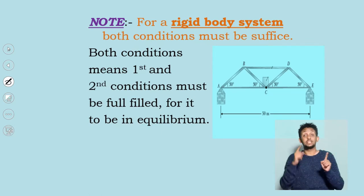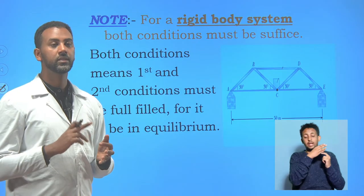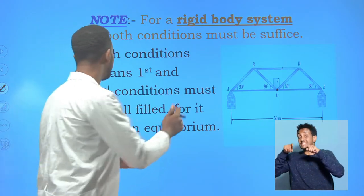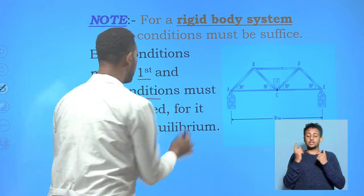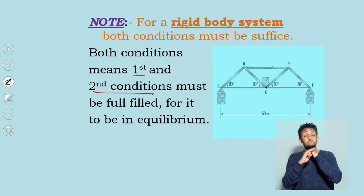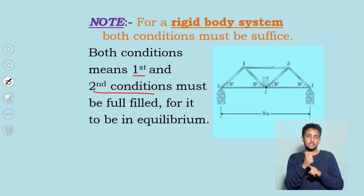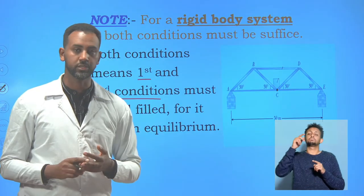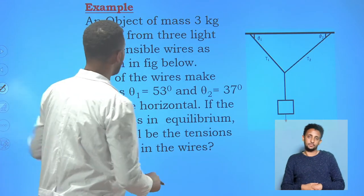For a rigid body system, both conditions must be fulfilled. The first condition — the translational condition — and the second condition — the rotational condition — must both be satisfied for a rigid body to be in equilibrium. For example, a bridge or a bar is a rigid body system, so on these objects you must apply both the first and second conditions.